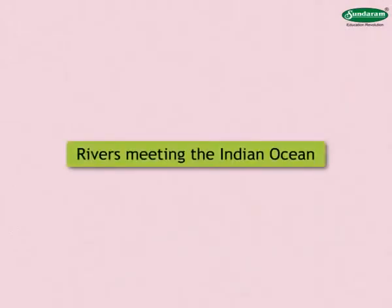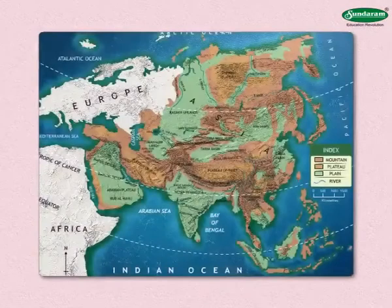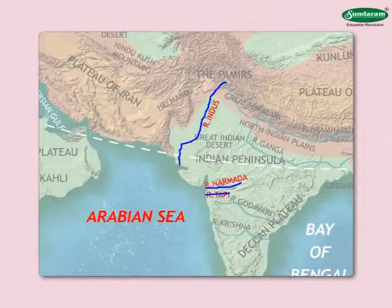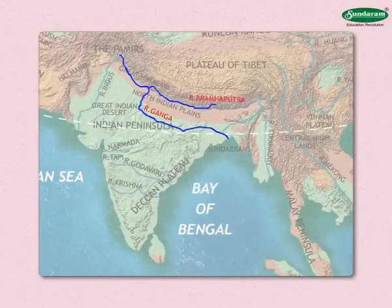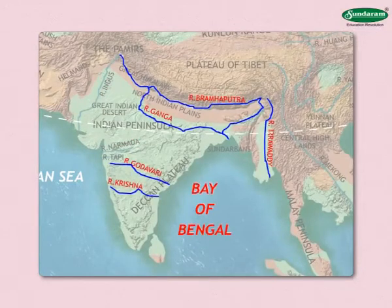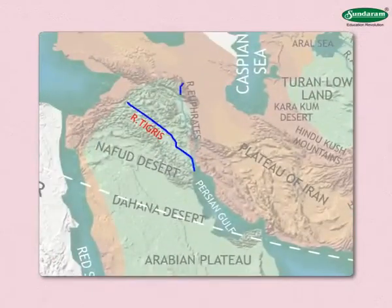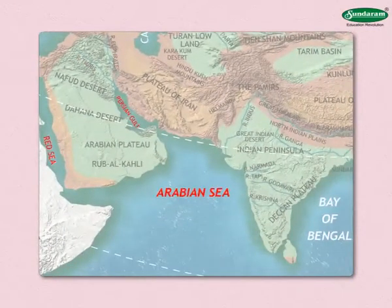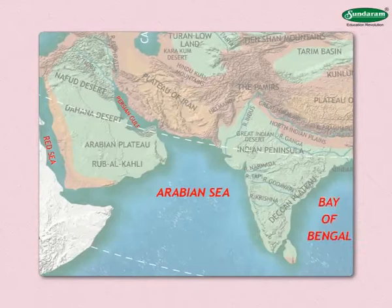Rivers meeting the Indian Ocean: In the Indian subcontinent, the Indus, Narmada, and Tapi are rivers that meet the Arabian Sea, whereas the Ganga, Brahmaputra, Godavari, Krishna, and the Irrawaddy in Myanmar meet the Bay of Bengal. The rivers Tigris and Euphrates from Iraq meet the Persian Gulf. The Red Sea, the Persian Gulf, the Arabian Sea, and the Bay of Bengal are all parts of the Indian Ocean.